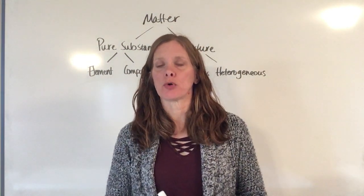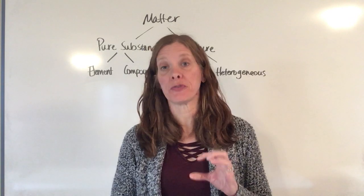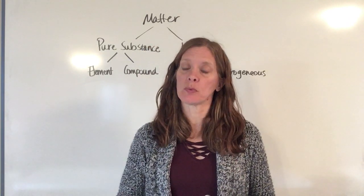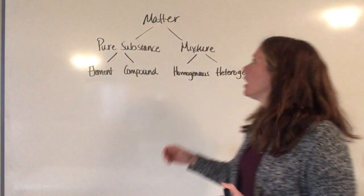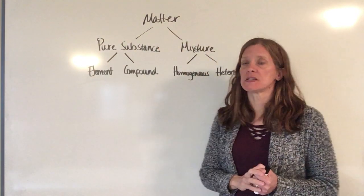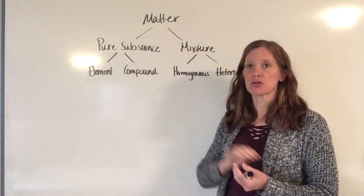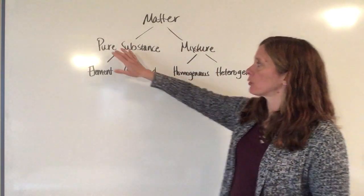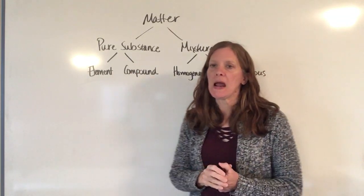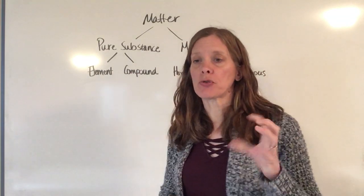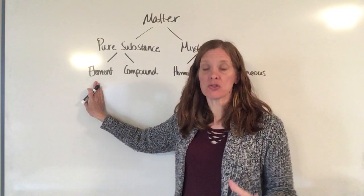The diagram on the board is probably one that looks very familiar because we talked about it back in chapter two when we first started talking about matter. We said that matter is divided into two categories: either pure substances or mixtures. We broke pure substances down into elements and compounds, and then we spent a lot of time in chapter three talking about atoms, which goes under elements.